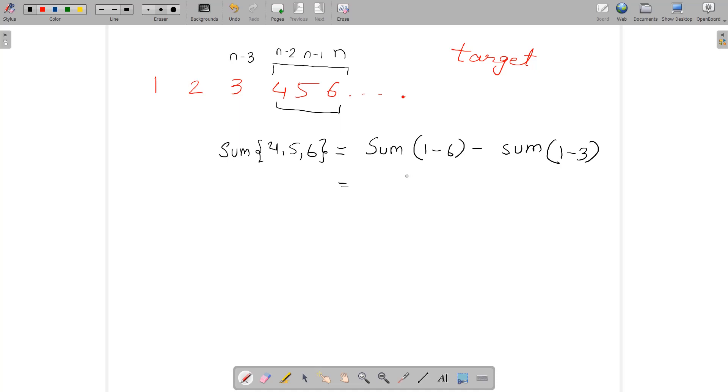The adjacent difference is exactly one, the absolute value of adjacent difference. Then you can see this sum is actually n into n plus one upon two, and this sum is actually n minus three to n minus two upon two.